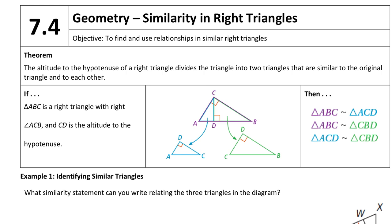So if I have a triangle and the altitude goes to the hypotenuse, which means a perpendicular that goes to the hypotenuse, it creates two smaller triangles within that triangle, ADC and CDB. And all three of these triangles are similar to each other.